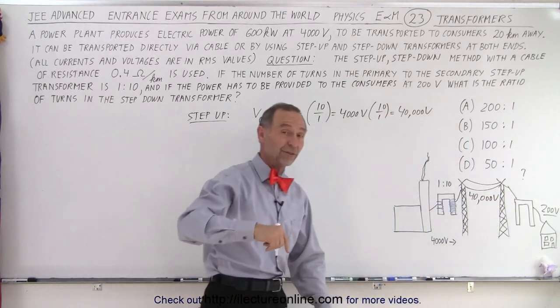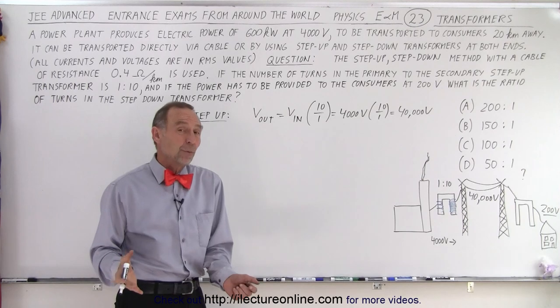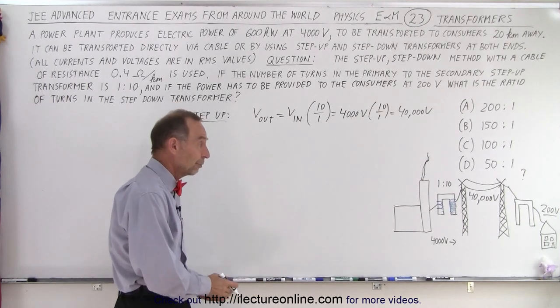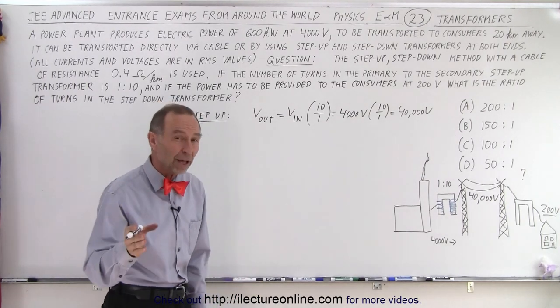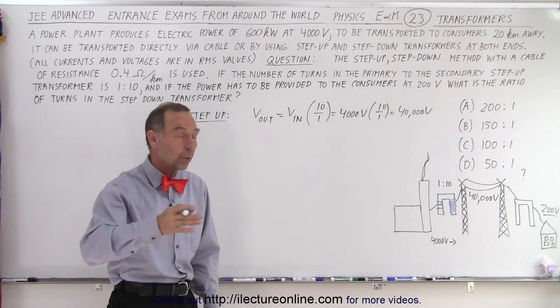And we showed you on the previous video what a benefit that was by stepping up from 4000 to 40,000 volts, because our power loss went from 30 percent to just 0.3 percent.